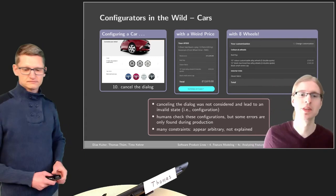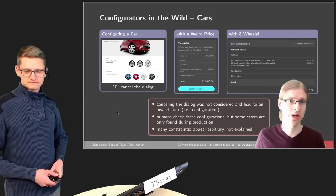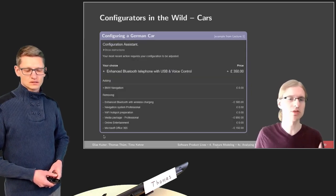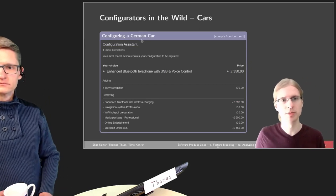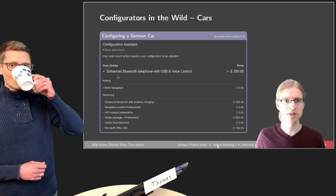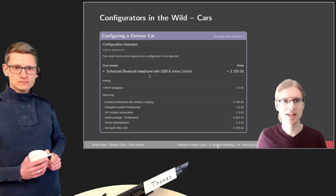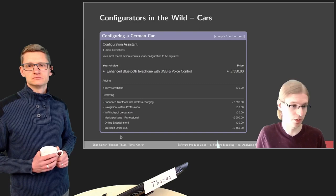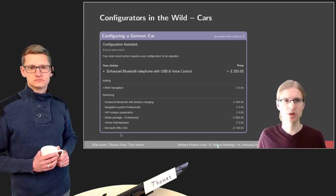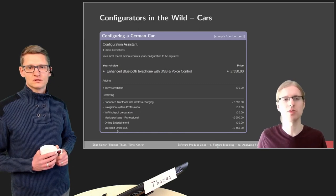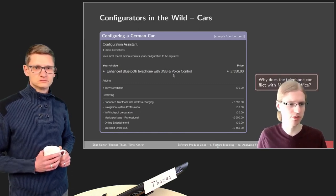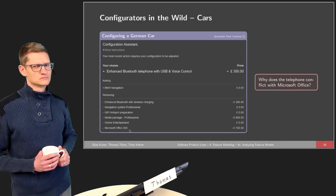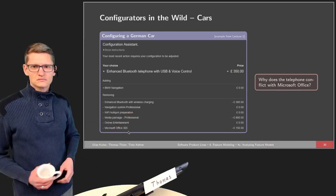Thanks Thomas for this explanation. This is obviously a big problem with online configurators, but it's not the only problem. For example, if you remember the introductory lecture, we had a German BMW car configuration where you wanted to configure enhanced Bluetooth telephone with USB and voice control, and it added some stuff and also removed some stuff. It was not really transparent what was added and removed, and also really unclear why it was removed. For example, what does Bluetooth and USB and voice control have to do with Microsoft Office?